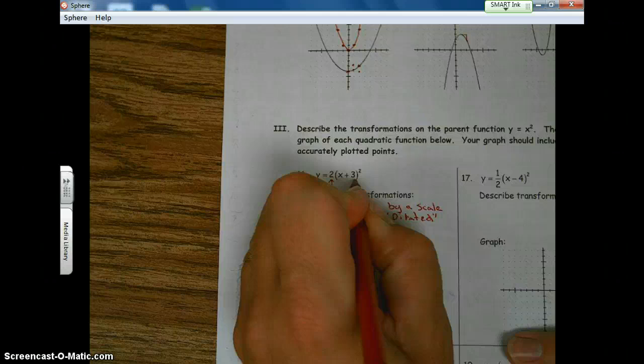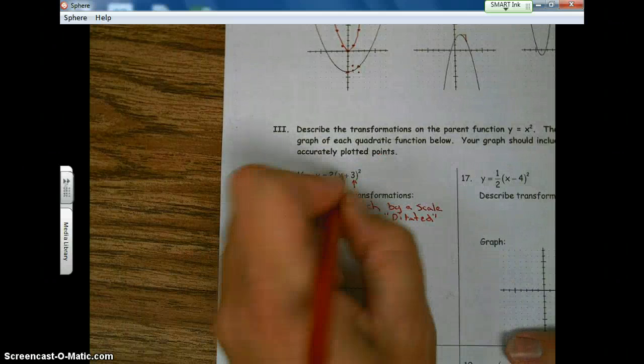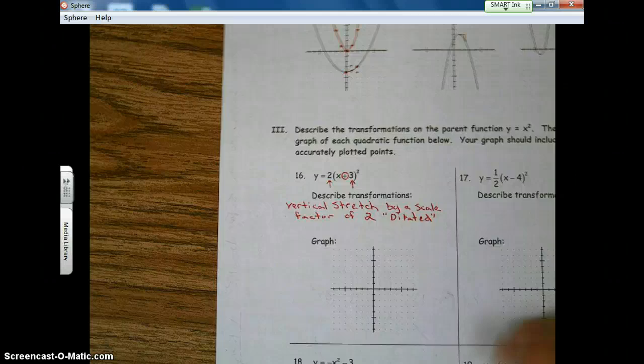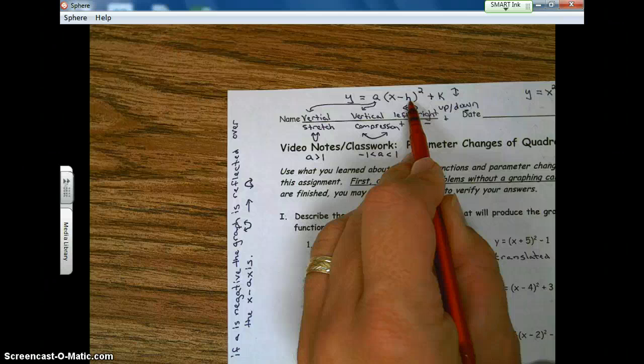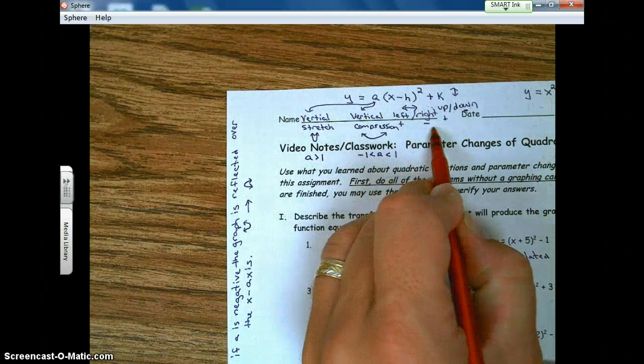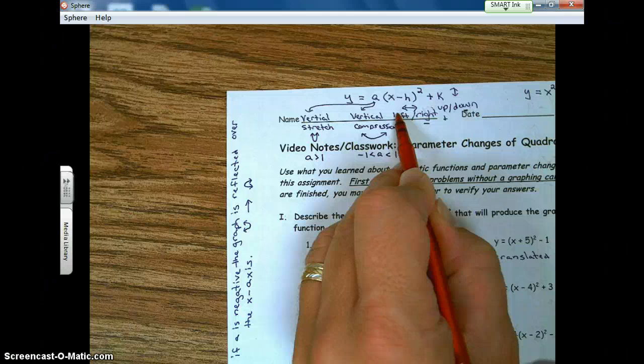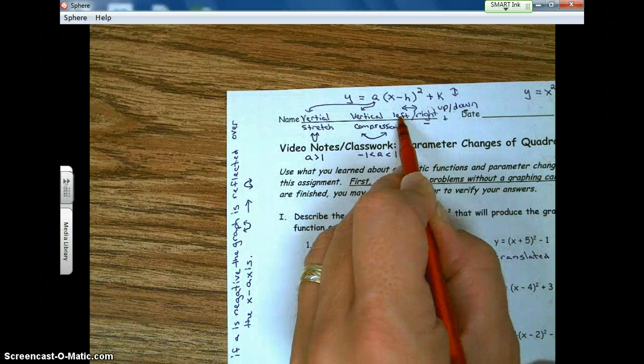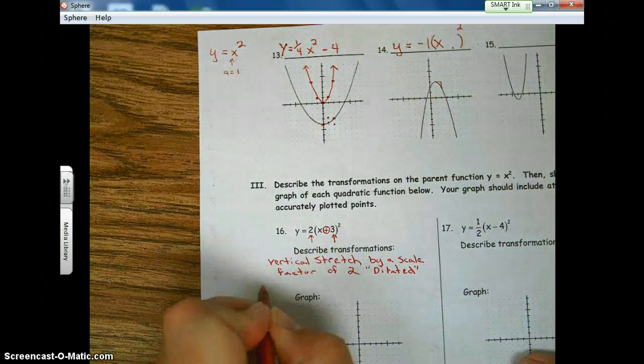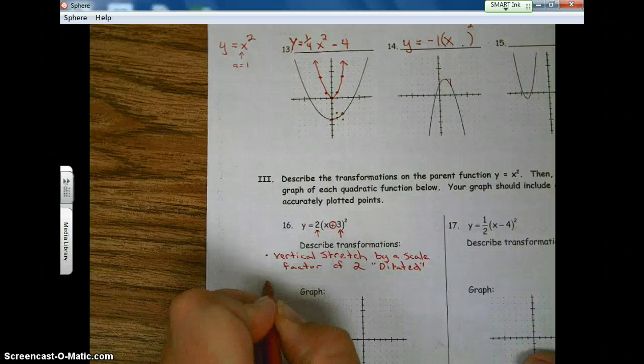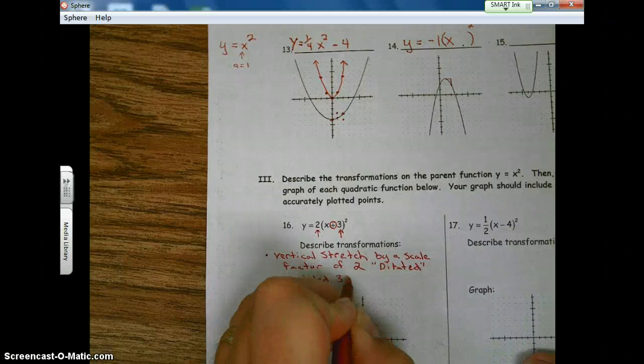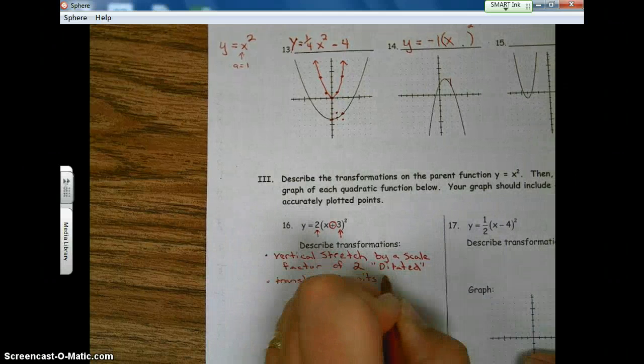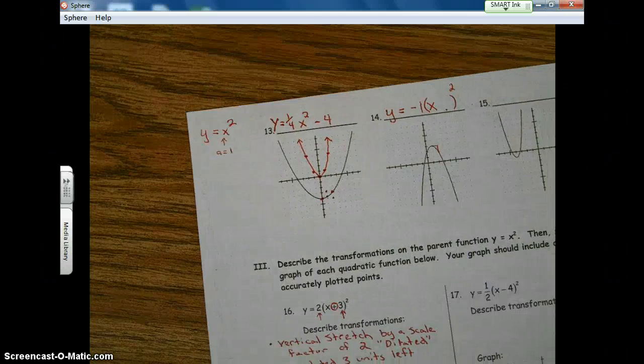Next number. Three. Plus three. Looking inside the parentheses, it's plus three. So looking down in our notes, plus is left. So that means it's moving left. Three units. Using a good geometry word here, we'll say, translated three units left.